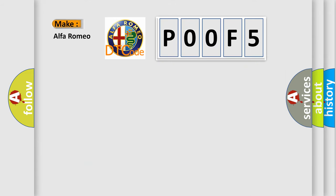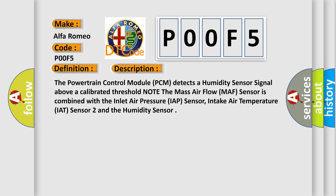So, what does the Diagnostic Trouble Code P00F5 interpret specifically for Alfa Romeo car manufacturers? The basic definition is Humidity sensor circuit high. And now this is a short description of this DTC code.